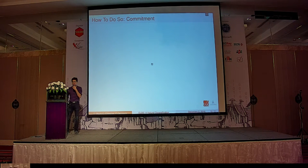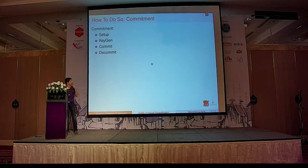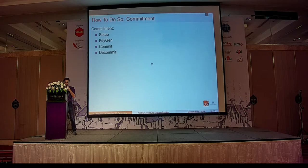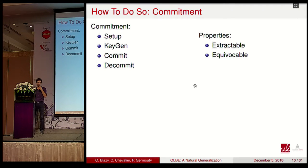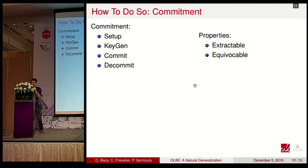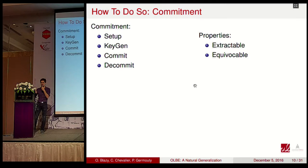To construct OSBE, we need a commitment scheme. A commitment scheme consists of four algorithms: two generation algorithms, one commitment algorithm, and one decommitment algorithm. Here we only use the commitment algorithm because decommitment will be implicit. There are two key properties a commitment can have: it can be extractable or equivocable. A commitment is extractable if with a trapdoor we can decapsulate it and see what has been committed.